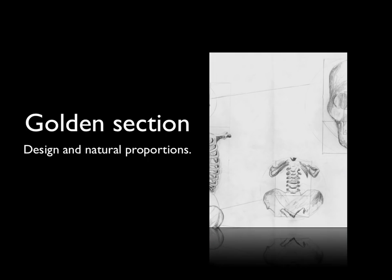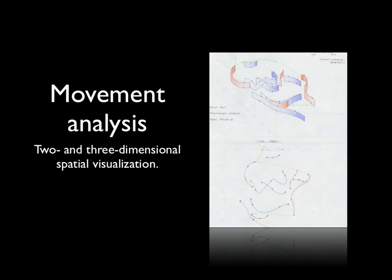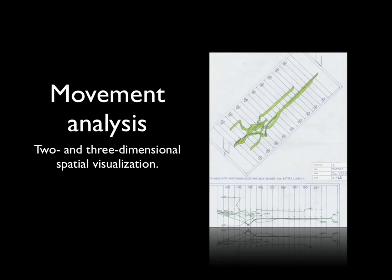In the golden section assignment, we look at design and natural proportions. One student managed to find the golden ratio in a rap song by Eminem, counting out all the beats and finding that the proportional ratio was in the song. In another assignment, students were asked to look at their favorite two minutes of a movie or sports game. One student looked at an ice hockey game — the ribbons at the top show the movements that some of the players make on the ice, and at the bottom you can see a top view or orthographic plan view. In another example, students showed movement of players on an American football field, with the bottom image showing a top view of that movement.